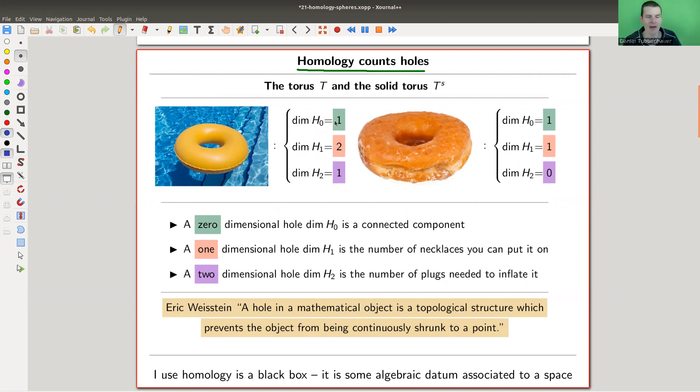A zero dimensional hole - well, if it exists, it has a zero dimensional hole. So both the torus, which is a swimmer ring, and the solid torus, which is a donut, have one zero dimensional hole. A one dimensional hole - the torus here has two one dimensional holes, you can go around like this or like this. This one has only one because this one is filled in, so the only one that remains is this one.